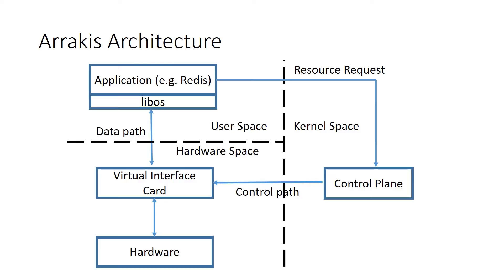The architecture the authors propose is a little different. The kernel space is pushed from the vertical path and moved horizontally to the right. Now the application sits on top of the hardware space. The way they do that is they provide a libOS box right under the application, which provides a kind of interface. To maintain all the guarantees and protections and process isolation, they have the application talk to the kernel via a different band path — what they call a control plane.